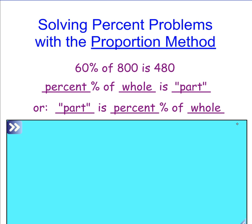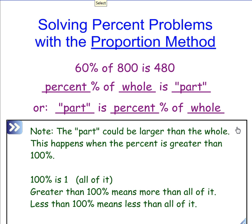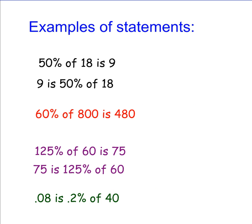It is important to realize the following note. The part over here could be larger than the whole. This happens when the percent is greater than 100%. 100% is 1, that means all of it. Greater than 100% means more than all of it.